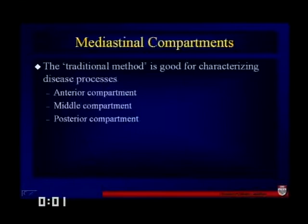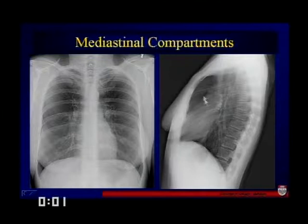The traditional method is what we're used to in terms of an anterior, a middle, and a posterior mediastinal compartment, and it's very good for characterizing disease processes. For a brief review, we have the anterior mediastinum here, the middle mediastinum, and the posterior mediastinum, and we can see normal interfaces. You can probably see a junction line anteriorly here — everything looks nice and clean.